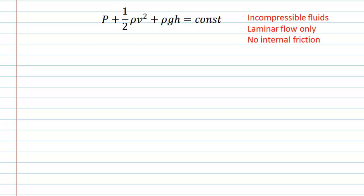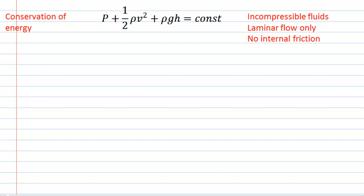Another thing to note is that Bernoulli's equation arises due to conservation of energy — that's a big idea in physics. If I look at the terms, they look familiar. I've got pressure as the first term, something which looks like kinetic energy, and my third term looks like potential energy. The sum of these three terms at one point in the fluid is constant. So are these energies?